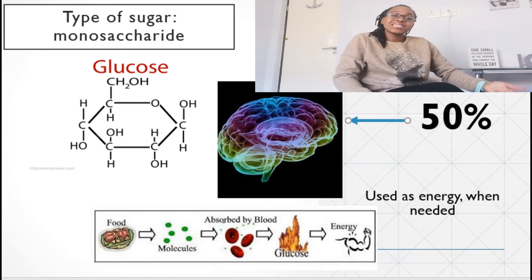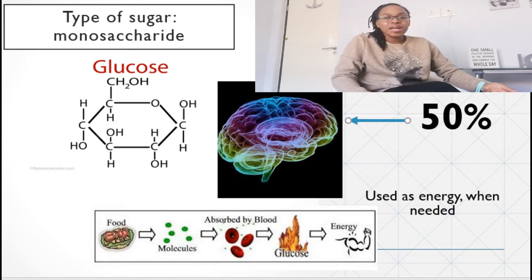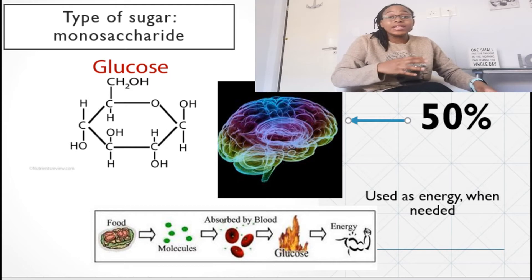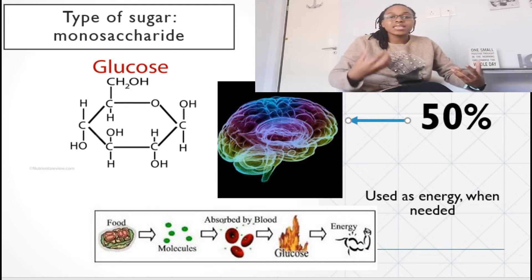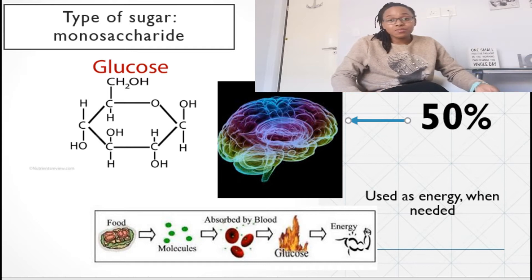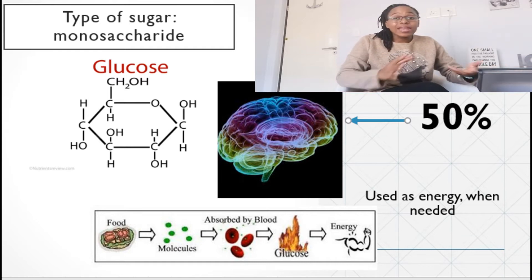Glucose is a type of sugar known as a monosaccharide which is broken down from carbohydrates into this form. It is generally used for energy, and 50% of the glucose that we need in the body goes to the brain and helps keep the brain functioning optimally. The rest of it is either stored or used in our muscles or other systems in our body when needed.